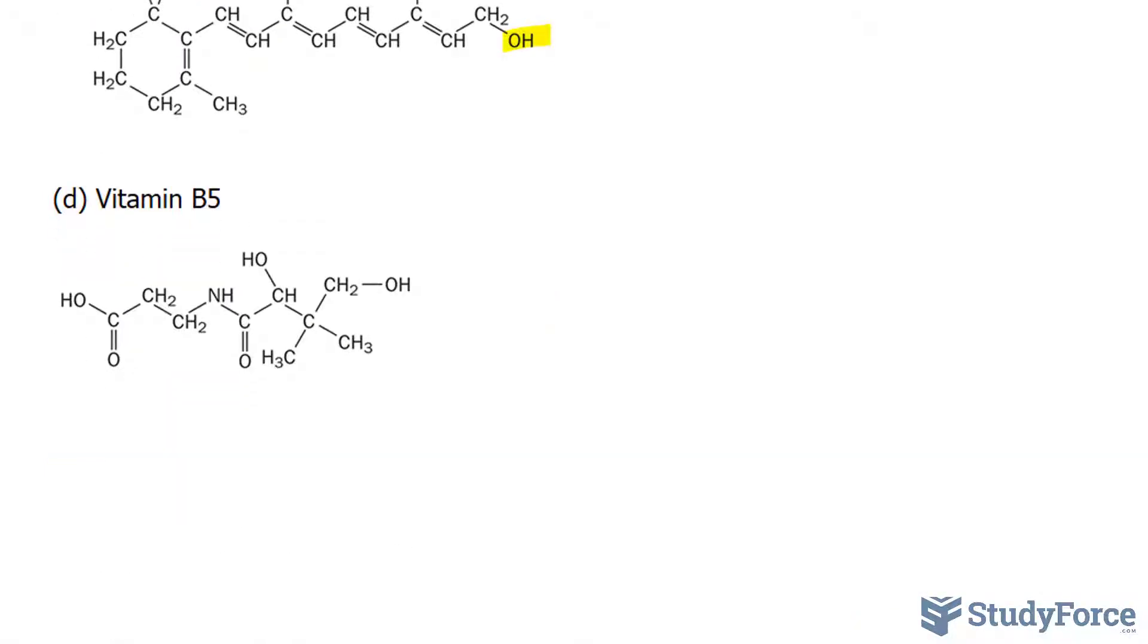And finally, in vitamin B5, there are three OH bonds and one NH bond, making it highly polar, and that's what gives it the ability to hydrogen bond with water. This means that vitamin B5 is water-soluble.